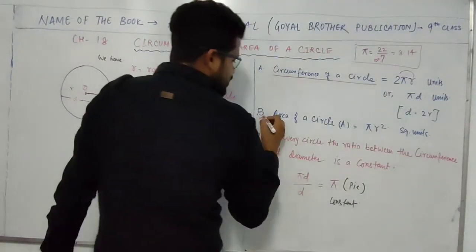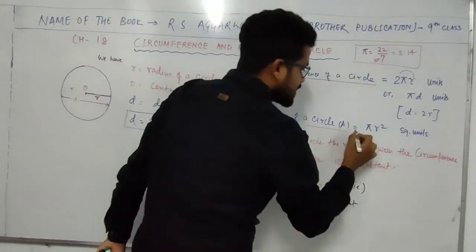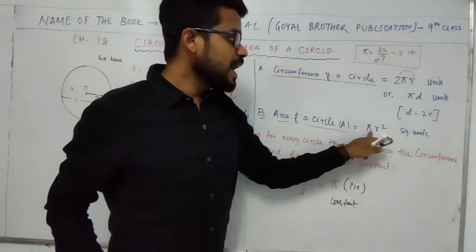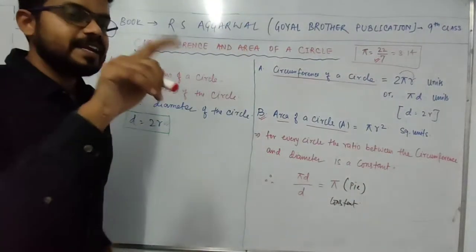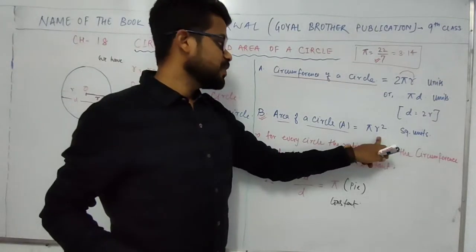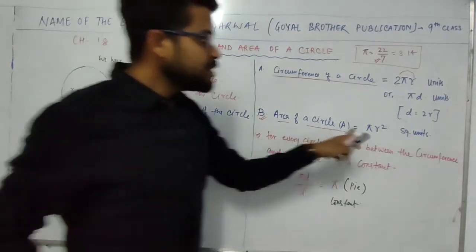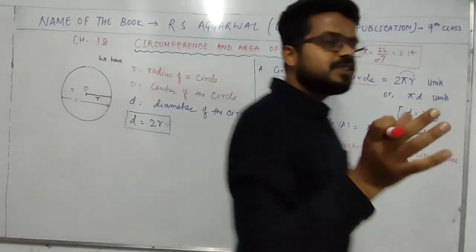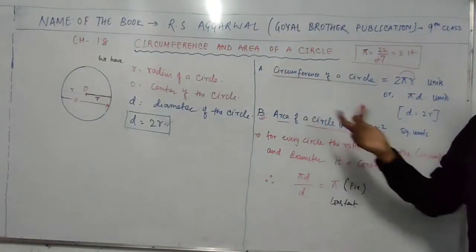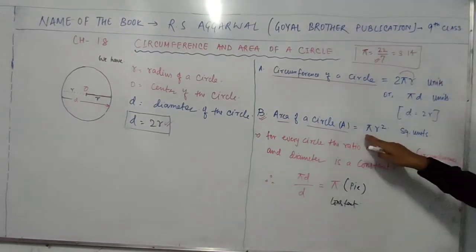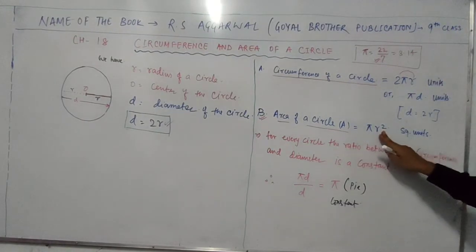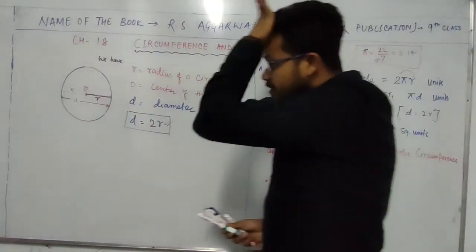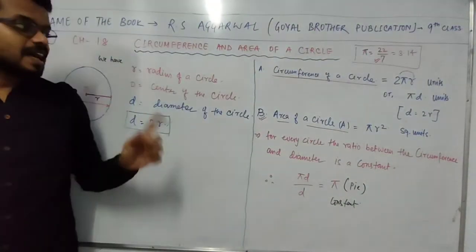Now come to the next point, which is area of a circle. Area of a circle is pi times r squared, where r squared means r into r. The unit of area is square units. For example, if the radius of the circle is 5 centimeters, then we have pi into 5 squared, and the unit is centimeter squared. So area of the circle is πr².